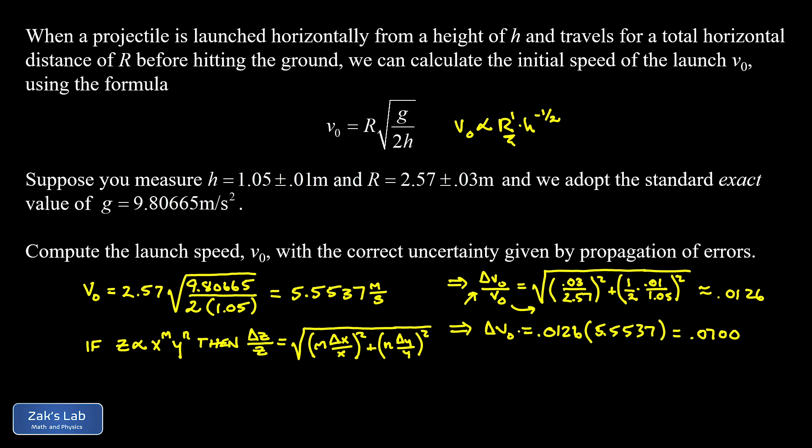Now, in my classes, I generally have students round the uncertainty to one significant digit. So I'm just going to write it as 0.07. And then we round the actual calculated value, in other words, the velocity in this case, we round it to the same decimal place addressed by that uncertainty. So we're going to round to the hundredths place. So finally, we can write our answer as v₀ equals 5.55 plus or minus 0.07 meters per second.